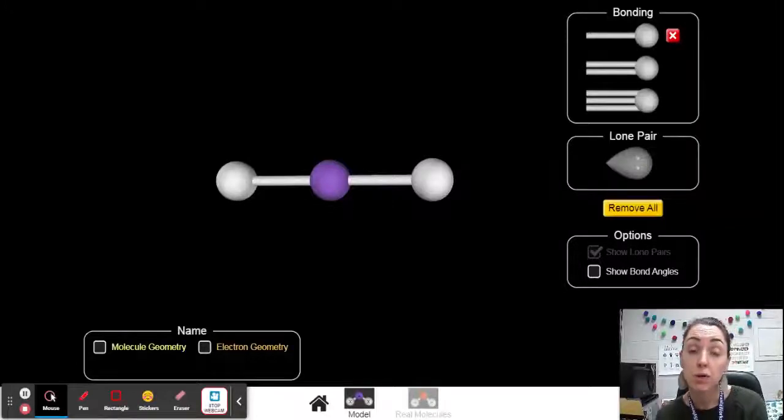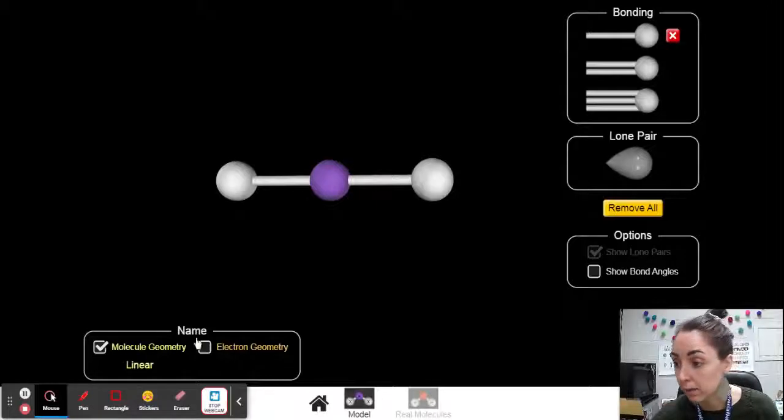Let's talk really quickly about the difference between electron geometry and molecule geometry. If we look here, I'm going to turn on my electron geometry, my molecule geometry, and my bond angles.